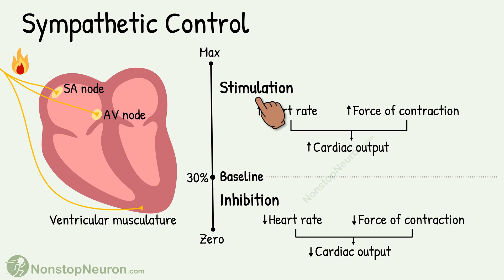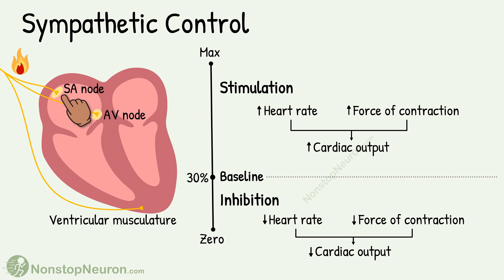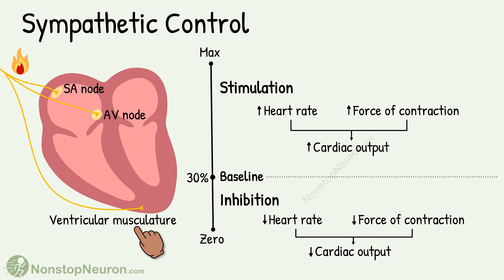Stimulation above this baseline level increases the heart's activity. This occurs by an increase in heart rate through stimulation of the SA node, as well as an increase in the force of contraction by stimulating the ventricular musculature. The net result is increased cardiac output.